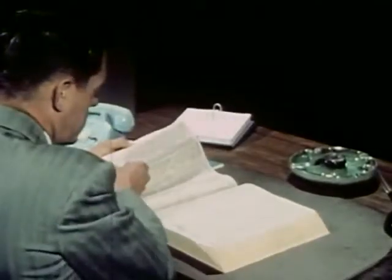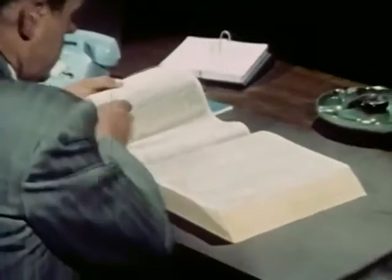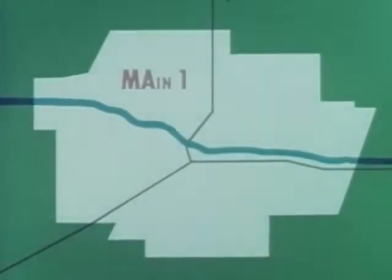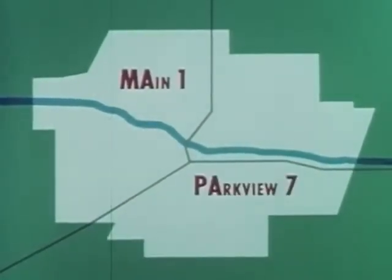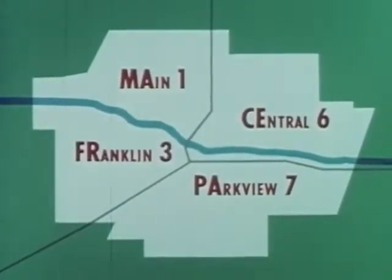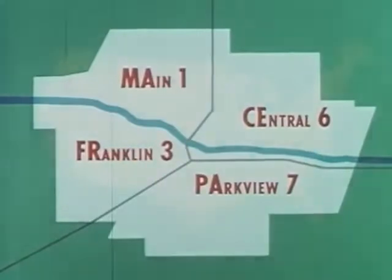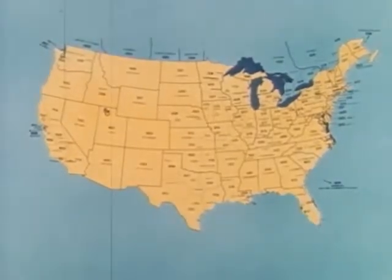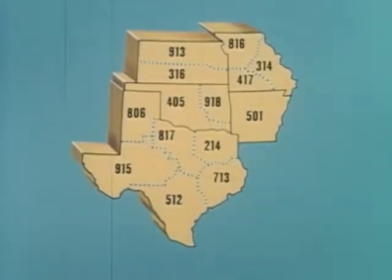Now, about those area codes. They work like the many central offices in a city. With all the telephones in a big city, the telephone company couldn't have just one central office and give each telephone a different number. Instead, the city is divided into sections, each with a central office — like Main 1 — which gives us enough numbers for the whole city. With the millions of telephones in the United States, the country has to be divided too, so the United States and Canada are divided into areas, each with its own code number.